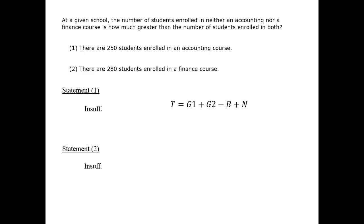Since both statements are insufficient individually, we must combine the statements. When we do so, we have more information, but it's still insufficient. We have G1 and G2 — we're closer to getting N minus B, but we still don't know the total number of students. It could be 280, it could be 1,000. Therefore, we have insufficient information altogether when the statements are combined, and the correct answer is E.